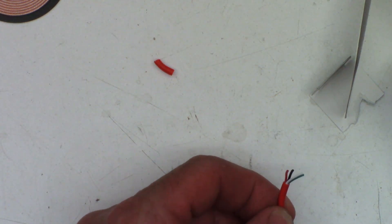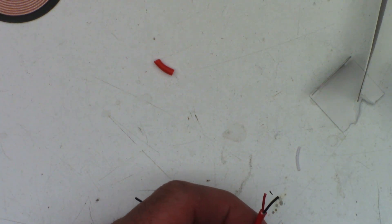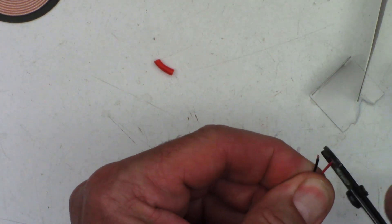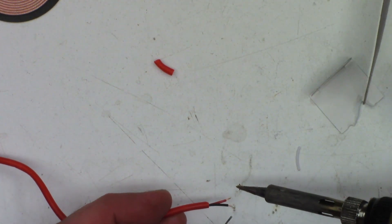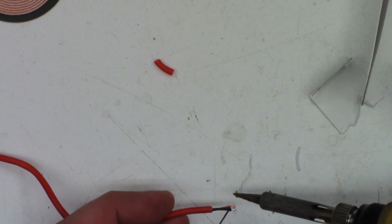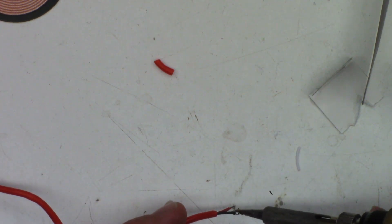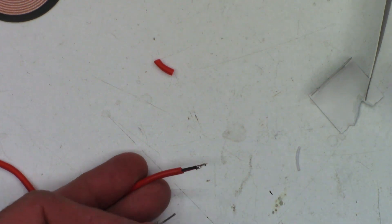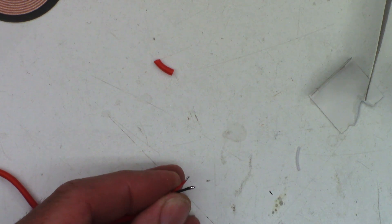I'm only going to use the red and the black so we can cut off the green and the white wires completely. Strip those back just like that. Go ahead and get them tinned up, ready to go. That looks good.